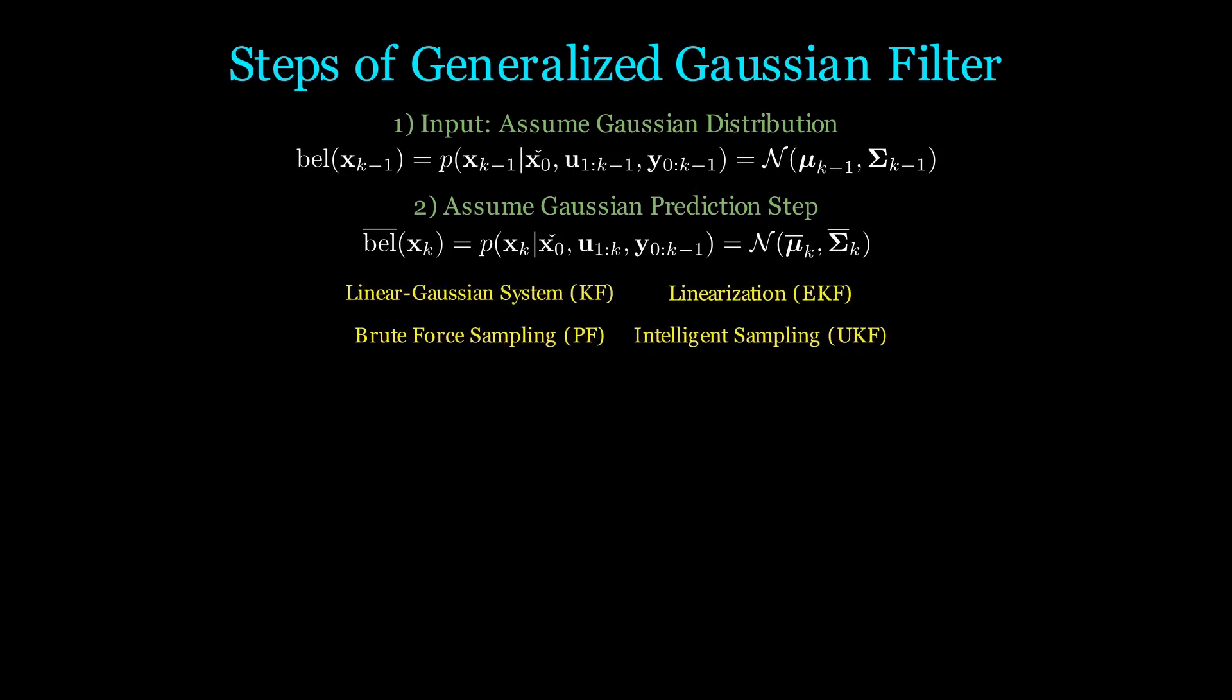If it is a linear Gaussian system, then the result is also exactly Gaussian. Or, we may simply use approximations such as the EKF, PF, or UKF. Following, this is the key step. We need to build our joint probability density. We will go through two examples later on how to actually build this.